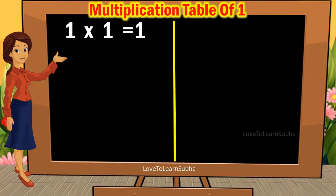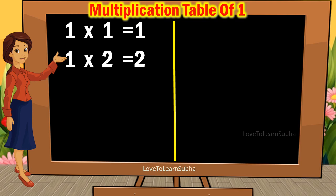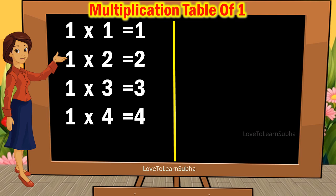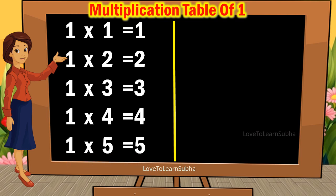1 1s are 1, 1 2s are 2, 1 3s are 3, 1 4s are 4, 1 5s are 5,